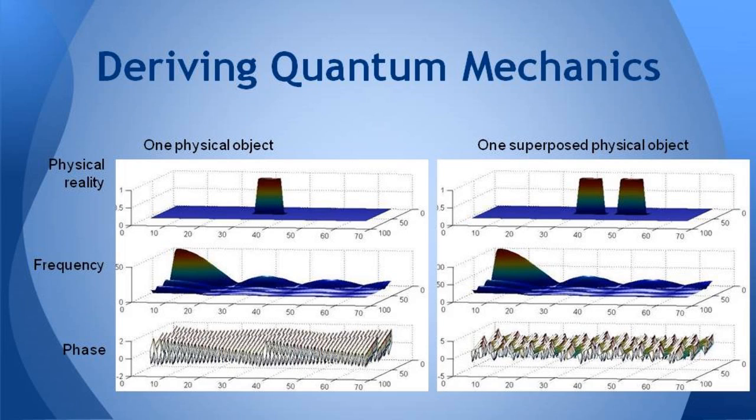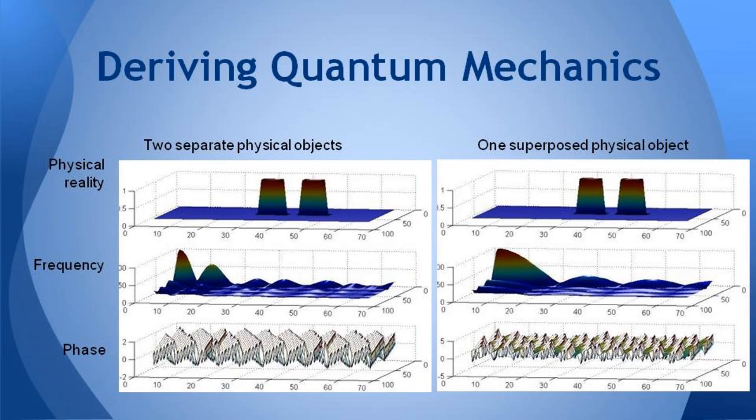And what we find is that if you have one physical object on the left, and there's the representation in Fourier space in the bottom two graphs on the left, and the two physical superimposed objects on the right have the same Fourier transform in terms of frequency spectrum but different phase relationship. Whereas if you have two physical objects that are separate on the left, you have a different frequency spectrum.